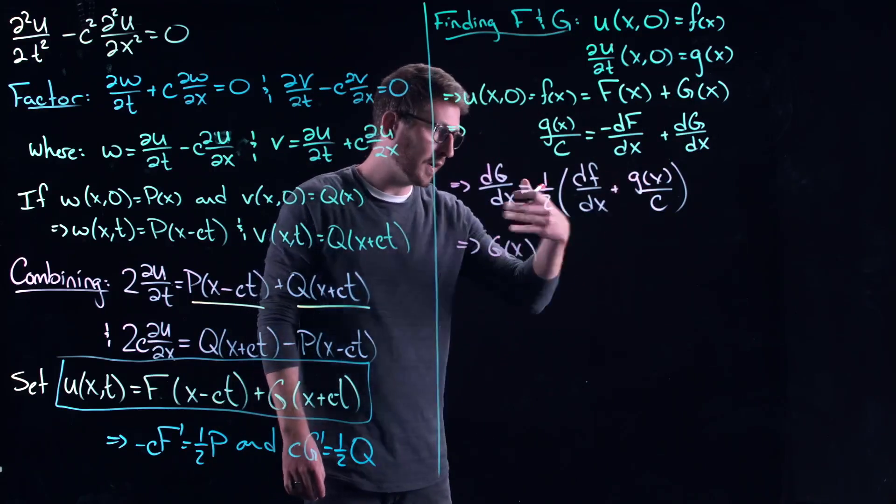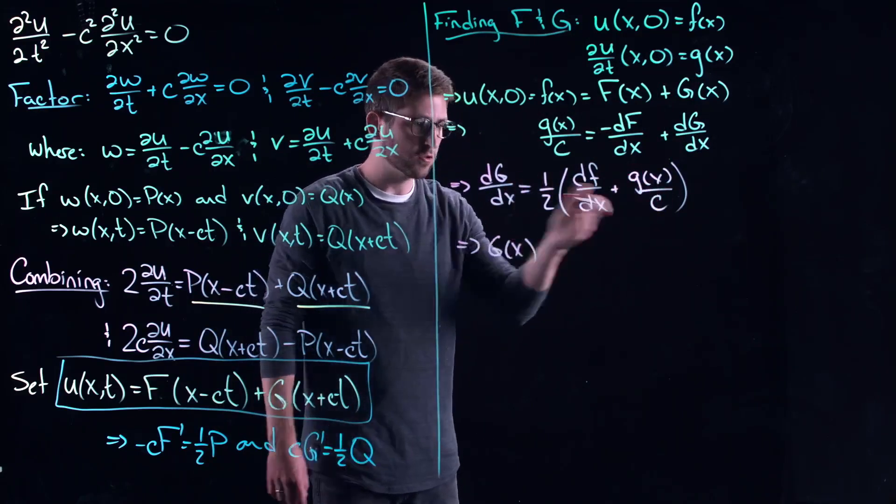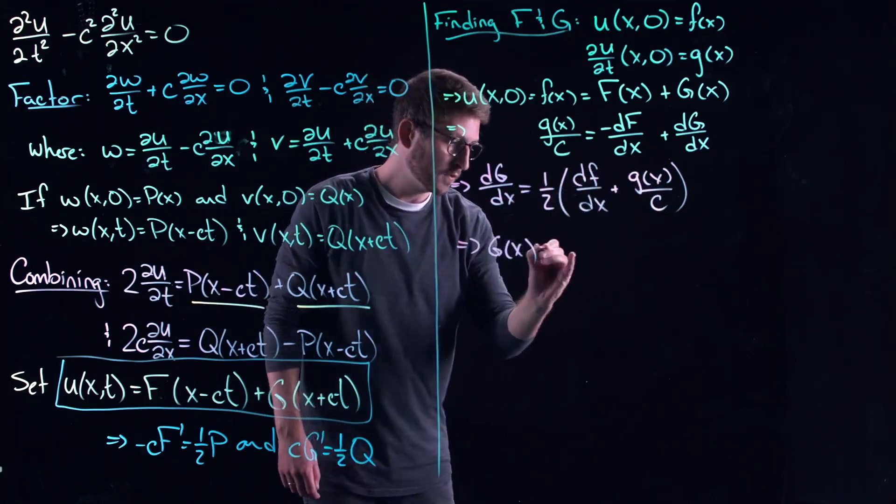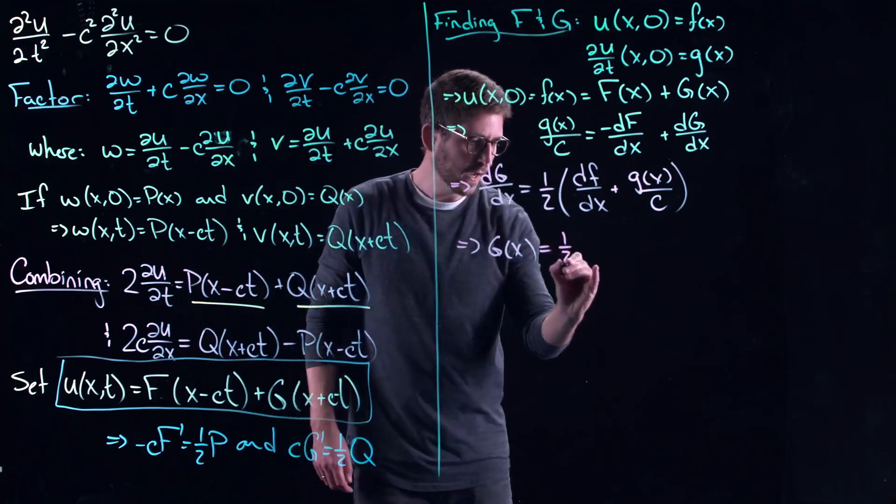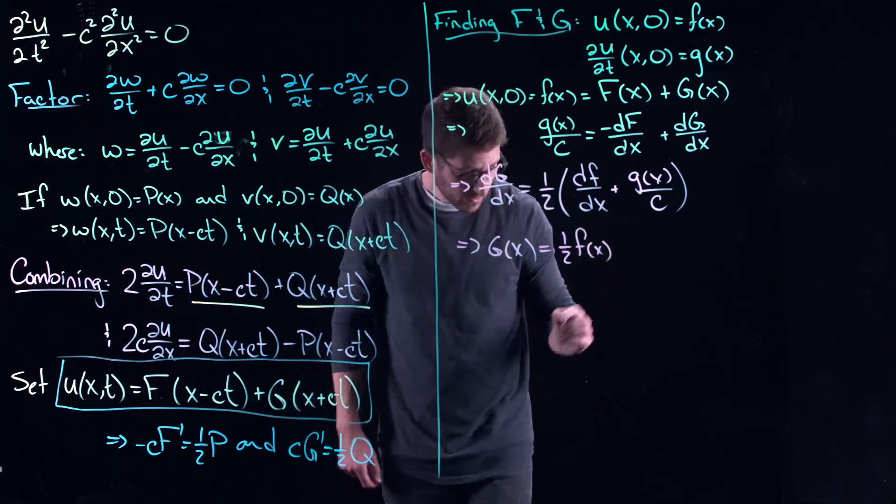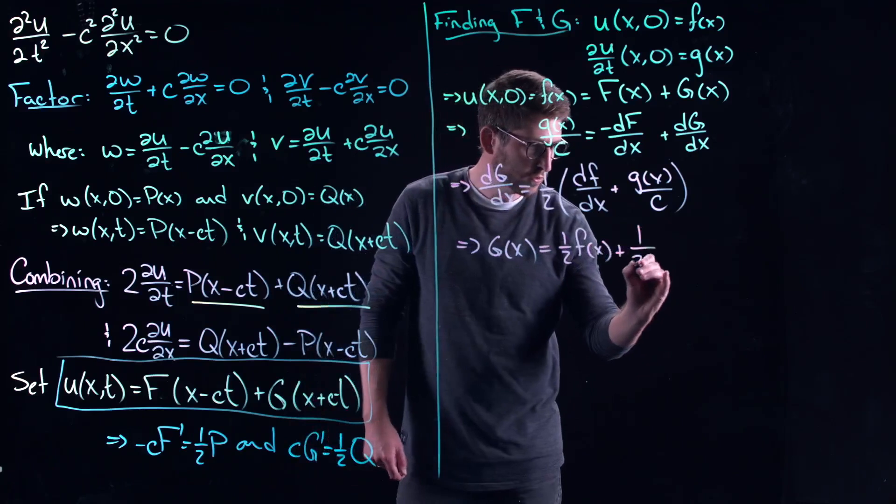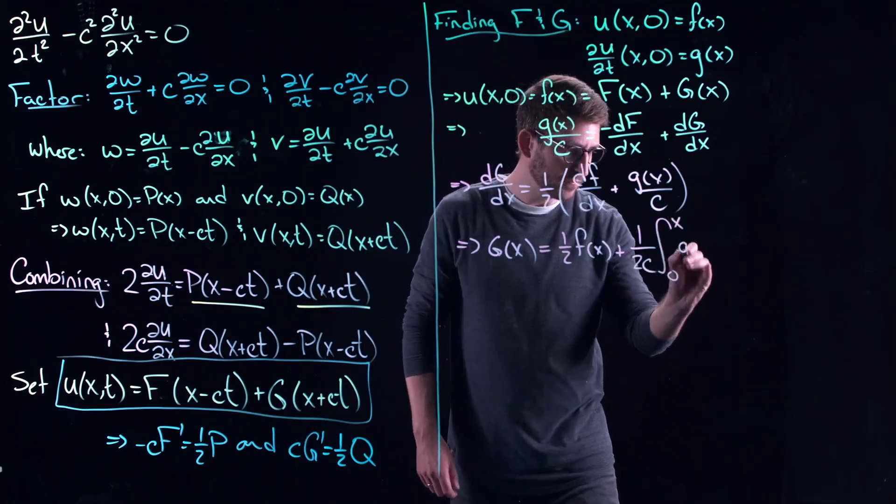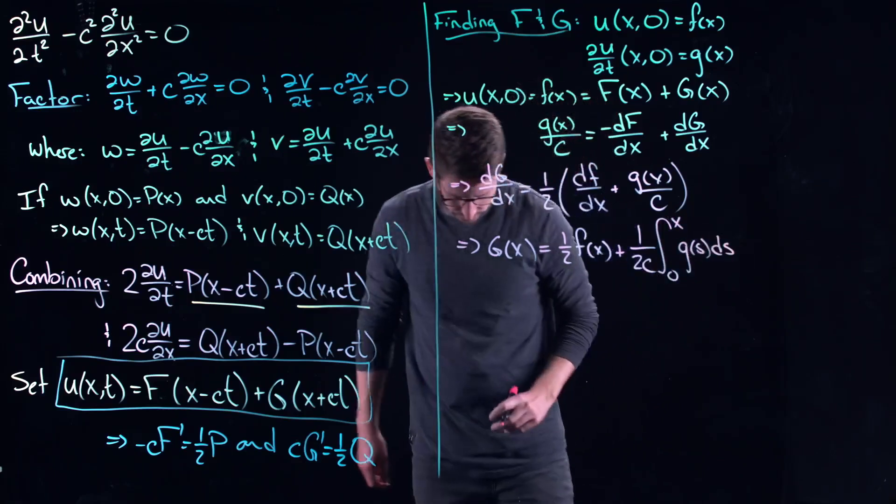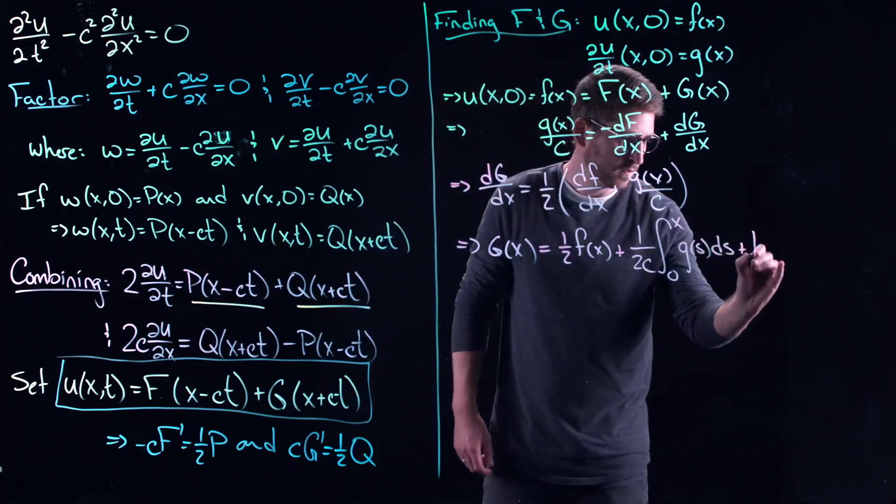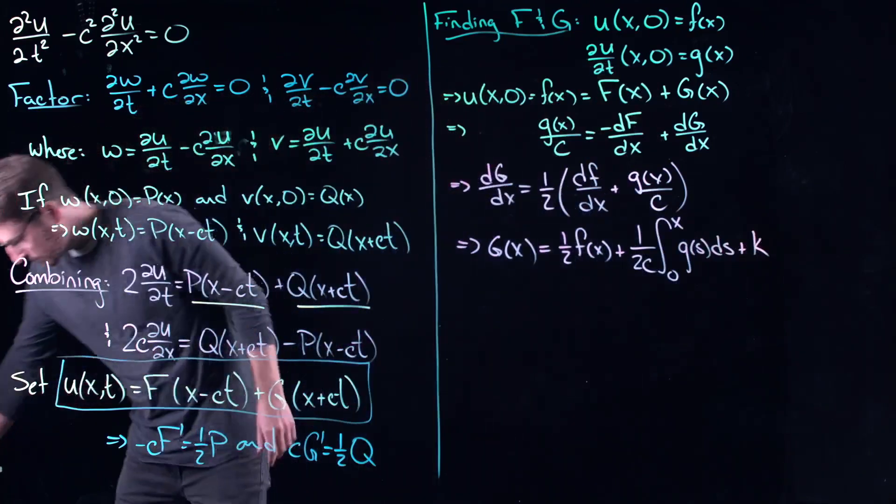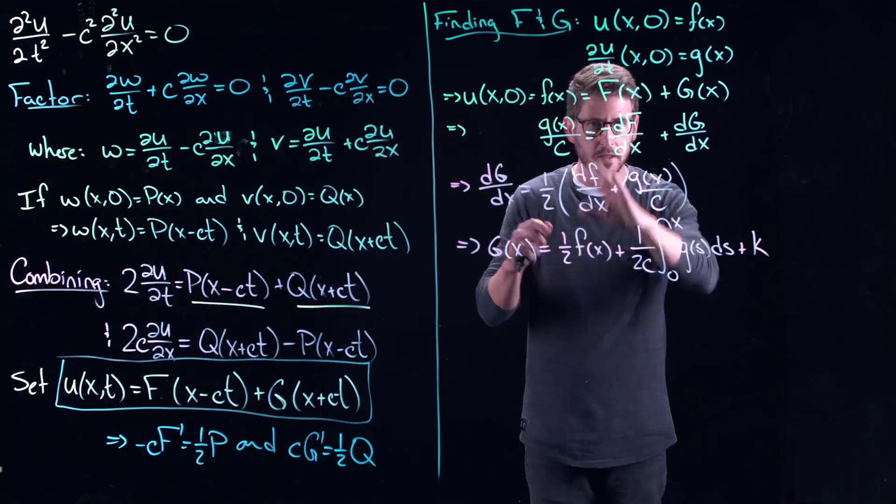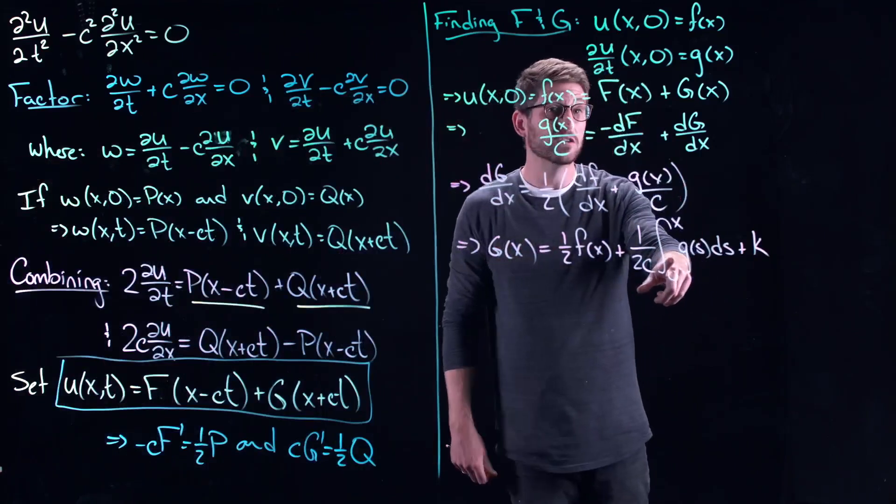Which tells me that I could integrate this thing. It's not a differential equation, it's just a straight derivative of this thing equals these functions. These are known. So in this case, I'm going to get one-half of F of X plus one over two C, and then the anti-derivative from zero to X of G of S dS. And then plus some constant of integration K. So I know it's maybe kind of looking a little bit complicated, but honestly, it's really just a straight integration. This is just anti-derivative.